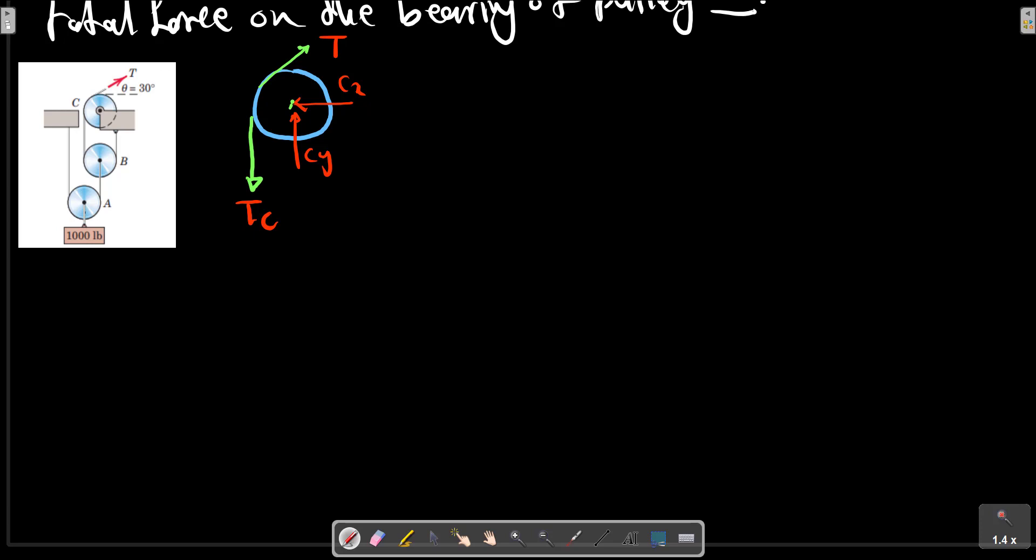The magnitude of T and Tc. For pulley number C, if we make a sigma Nc, we can calculate that T multiplied by R minus Tc multiplied by R equals zero. At equilibrium, T equals to Tc.